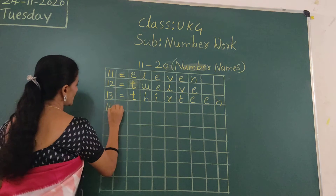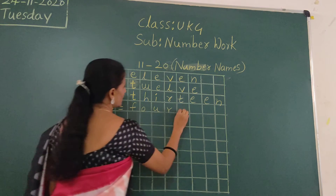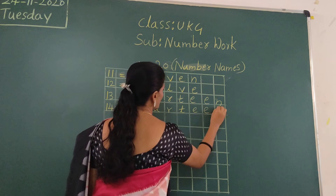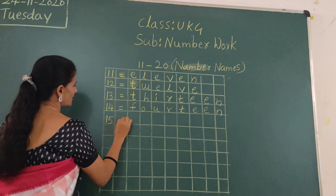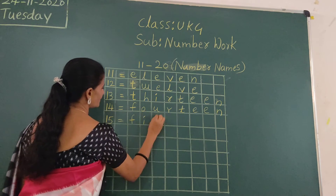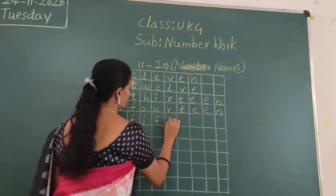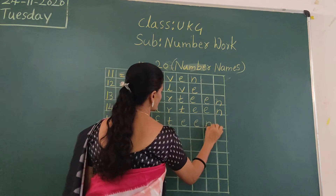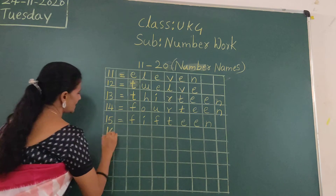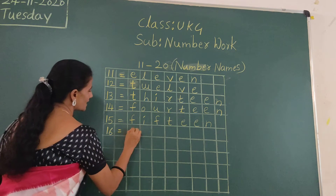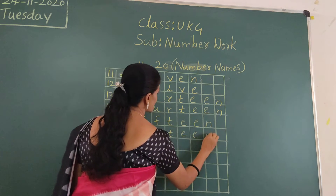Next, 14 — F-O-U-R-T-E-E-N, 14. Next, 15 — don't make a mistake. F-I-F-T-E-E-N, 15. Next, 16 — one, six, 16. S-I-X-T-E-E-N, 16.